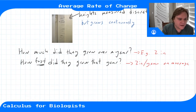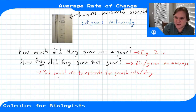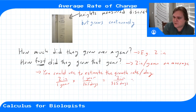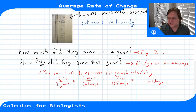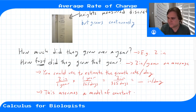So if you were to divide by however many days are in a year — 365 — that would tell you the number of inches per day. You could use this to estimate the growth rate per day: two inches for one year divided by 365 days gives you some number of inches per day. But when you're doing this, you're already assuming a model — a model of constant growth. You're assuming that average rate of growth is the same at all points in time throughout that year.